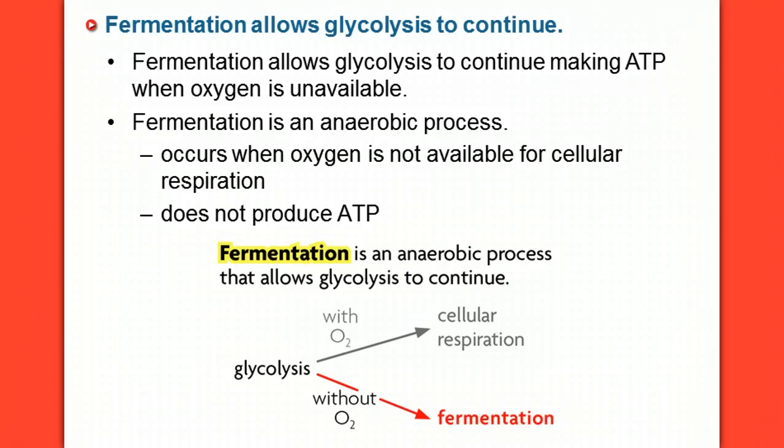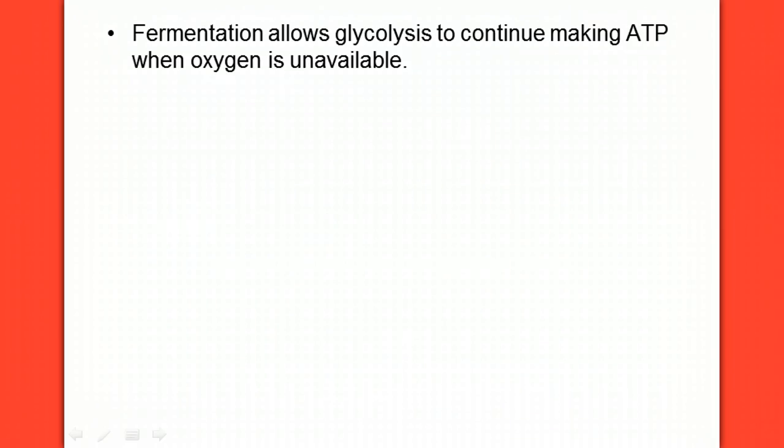So the idea here is that following glycolysis, there are two different pathways to create ATP energy. You can follow the aerobic pathway towards cellular respiration that occurs in the mitochondria, or you can continue without oxygen and follow this fermentation pathway. So let's learn about fermentation.